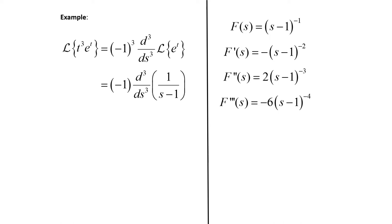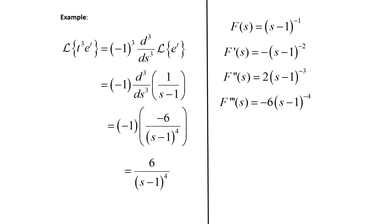We take this third derivative and plug it into our formula. This will be negative one times negative six over (s minus one) to the fourth. Simplifying, those two negatives become positive, so this is six over (s minus one) to the fourth. We get that same result if we had used the translation theorem, so this gives us flexibility in the way we solve a problem like this.